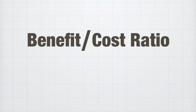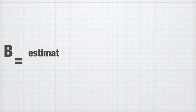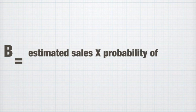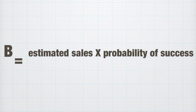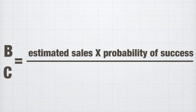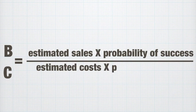As you can see, it is a ratio, benefit divided by cost. It looks like this. The benefit is the estimated sales that would be made in this particular project multiplied by the probability that we will succeed in hitting that number. The cost is the estimated costs times by the probability of achieving the cost target.